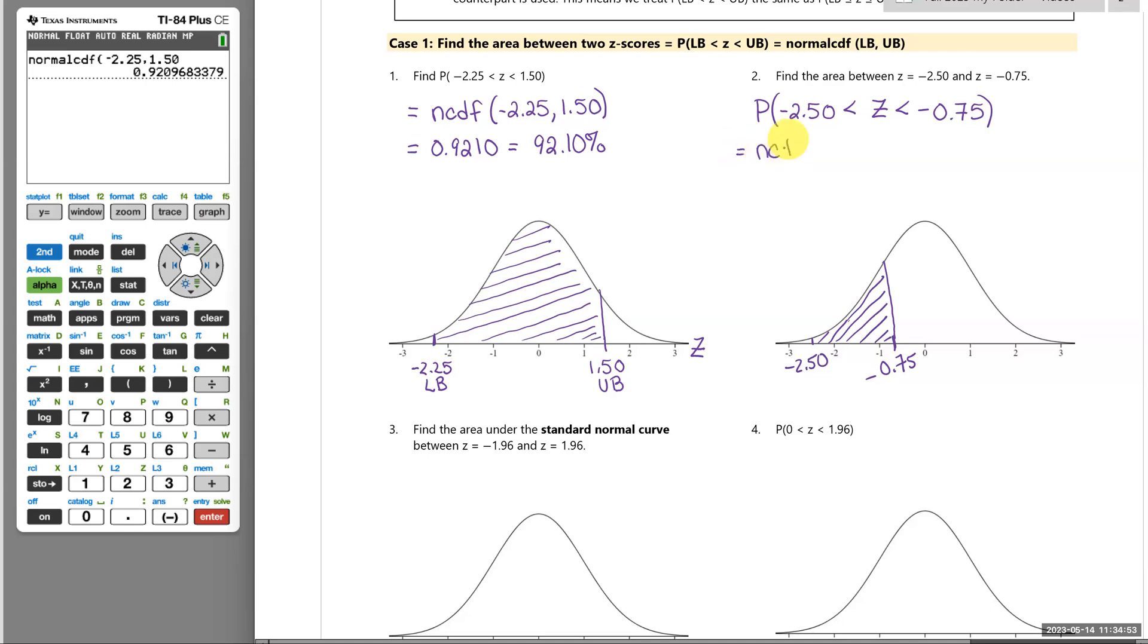Normal CDF, negative 2.50, negative 0.75. Always left to right when you define the region: lower bound, upper bound. So we get negative 2.50, negative 0.75, and that's 0.2204 in decimal. Or we'll write it again in percent, so 22.04%.